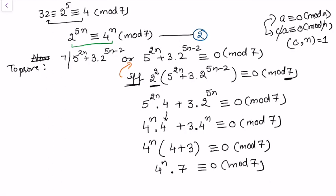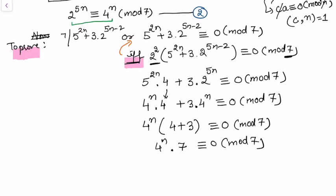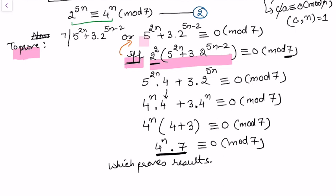So we get 4 to the power n times 7 congruent to 0 modulo 7, which is clearly true. All steps were if and only if, so the proof goes in both directions. Since the left-hand side appears as a multiple of 7, this proves that 5 to the power 2n plus 3 times 2 to the power 5n minus 2 is divisible by 7. Hence it is proved.